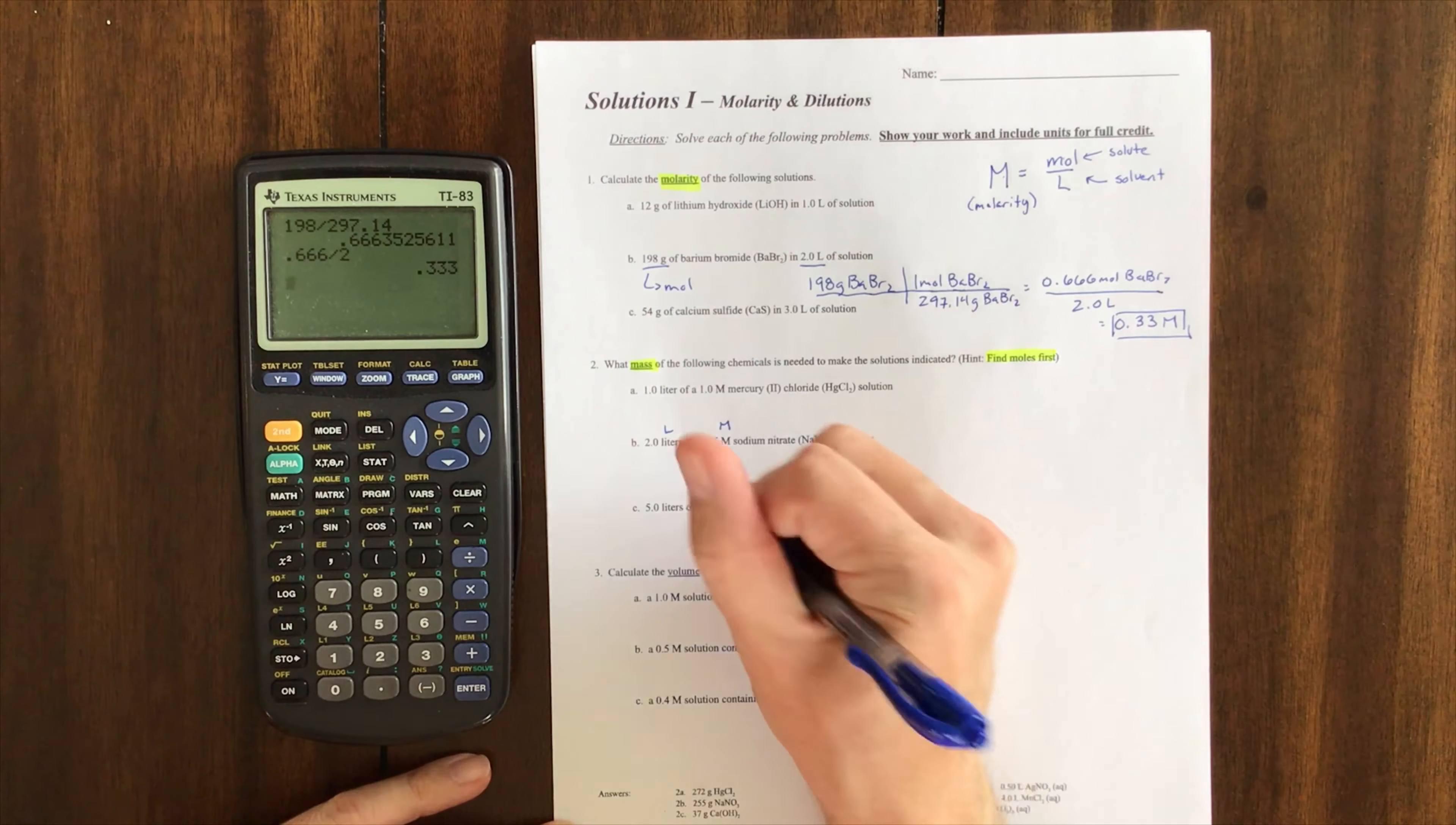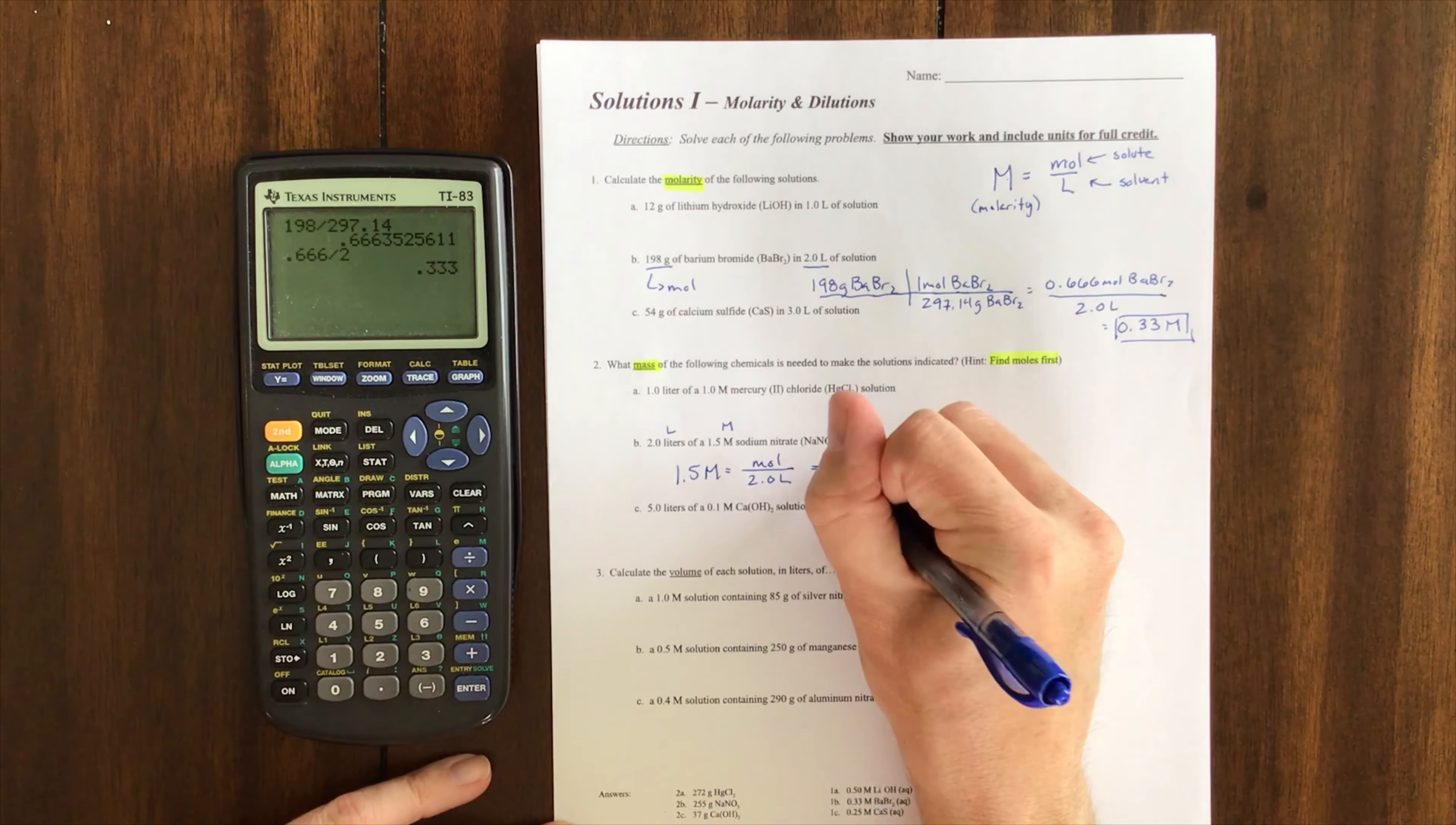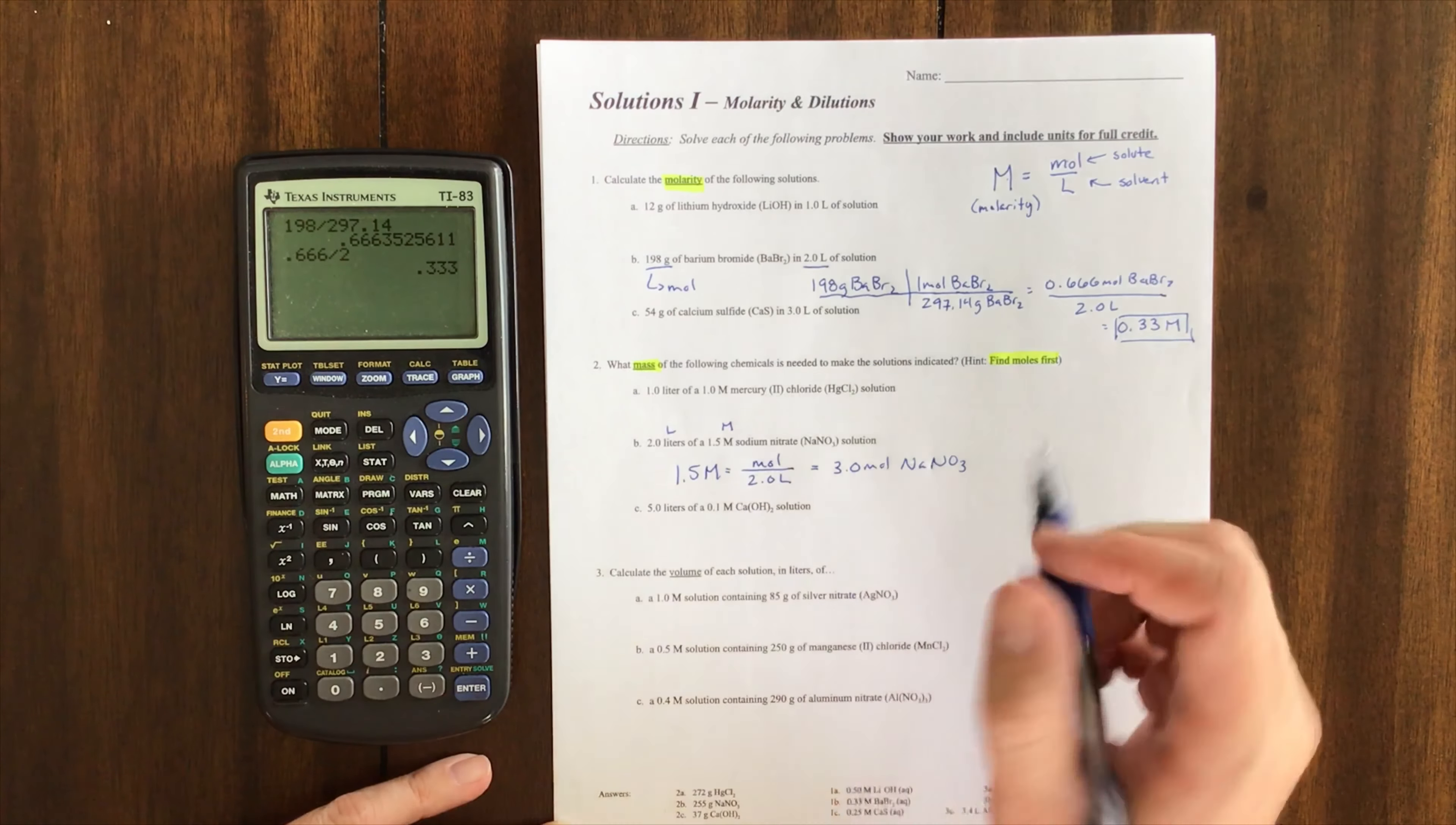I like to set it up in the relationship: molarity equals moles over liters. I have two liters—it's just a coincidence. So I'm going to multiply this: two times one and a half is three moles of NaNO3. If you were to ask for moles, you'd be done, but I'm asking for grams or mass.